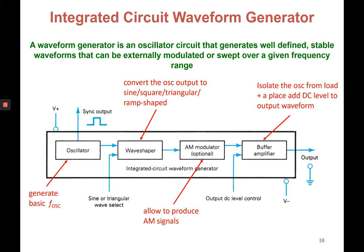A waveform generator is an oscillator circuit that generates well-defined and stable waveforms that can be externally modulated or swept over a given frequency range. It has four components: oscillator, wave shaper, AM modulator (which is optional), and buffer amplifier. The oscillator generates the basic frequency of oscillation, the wave shaper converts the oscillator output to sine, square, triangle, or ramp-shaped waveforms, the AM modulator allows producing an AM signal if needed, and the buffer amplifier isolates the oscillator from the load and adds a DC level to the output waveform.